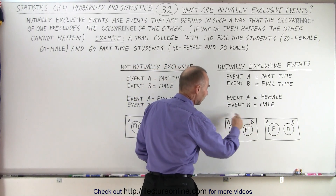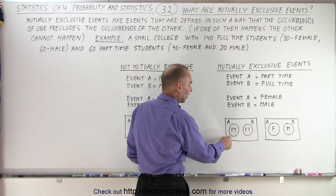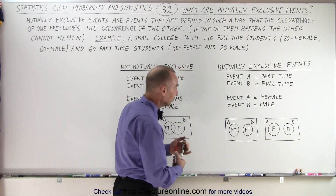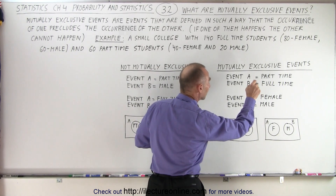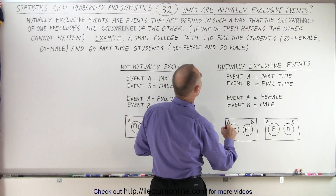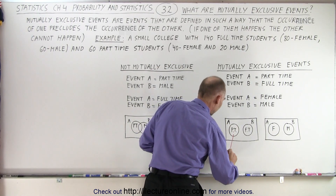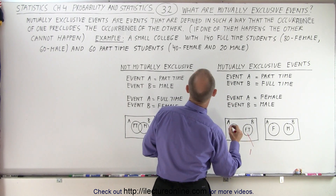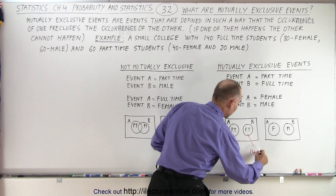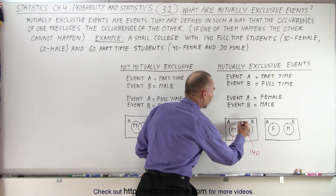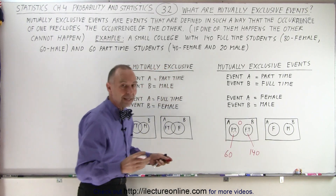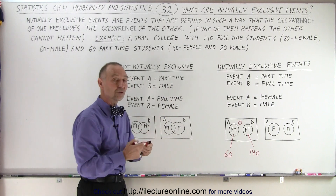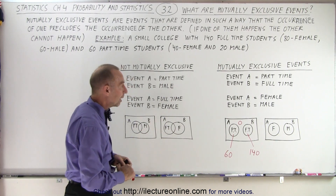We have it in a Venn diagram where we have a circle representing the part-time students and a circle representing the full-time students. There are 60 in the part-time students circle and 140 in the full-time students circle, and notice there's zero in any other category, because 60 plus 140 gives you the entire student body of that college.